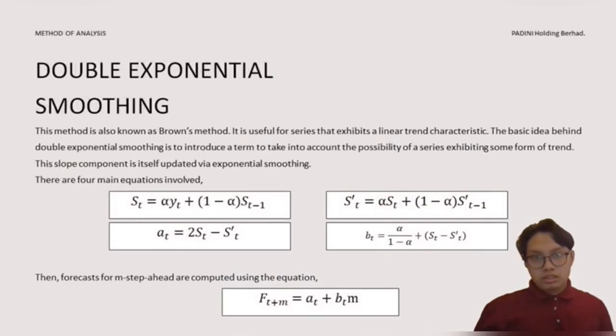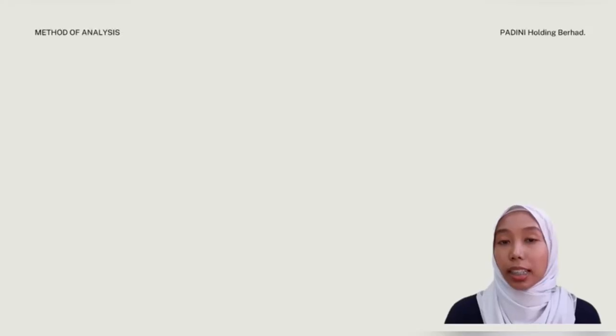The last method is double exponential smoothing technique. This method is also known as Brown's method. It is useful for series that exhibits a linear trend characteristic. The basic idea behind this technique is to introduce a term to take into account the possibility of a series exhibiting some form of trend. There are four main equations involved: ST, S'T, AT, and BT. Then, forecast for M step ahead are computed using the equation FT+M = AT + BT*M.